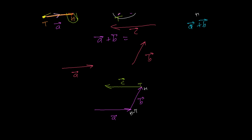Now let's look at our journey. We started from this point and finished at this point. From the starting point to the finishing point, we connect them. This red vector represents A plus B plus C — the sum of vector A, vector B, and vector C.